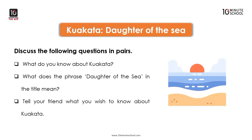Kuakata Beach is a sandy expanse, 18 kilometers long and 3 kilometers wide from the beach. One can have an unobstructed view of both sunrise and sunset over the Bay of Bengal. It is in Patuakhali district and Barishal division. Its temperature is 28 degrees Celsius.